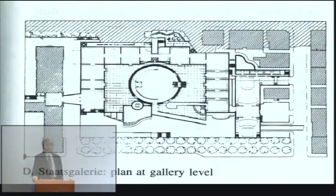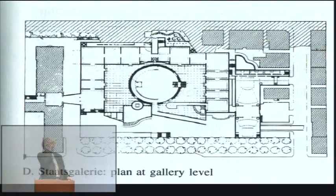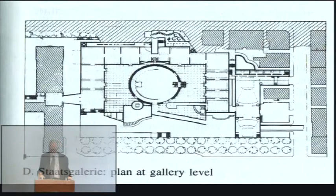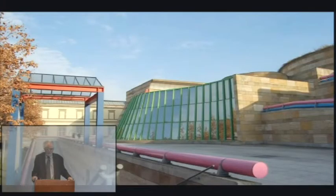I showed you this diagram of the Staatsgalerie in Stuttgart by Stirling. What is of interest is the question that the public can circulate around the drum and disappear up the hill without ever going into the museum — it's like one world living within the other. And yet it is simply a U-shaped rectangle with a circular shape within it — the same proposition Asplund did with his library, but reversed out. It's what you do with it.